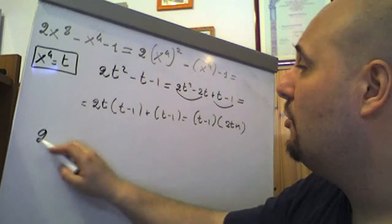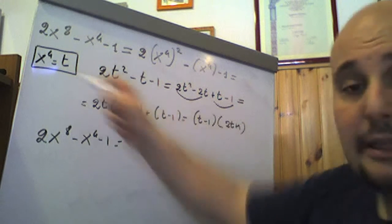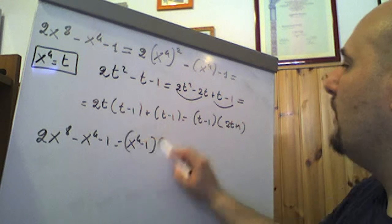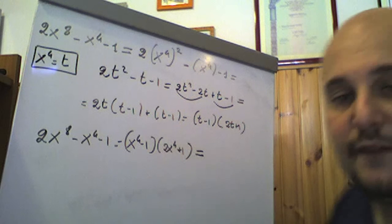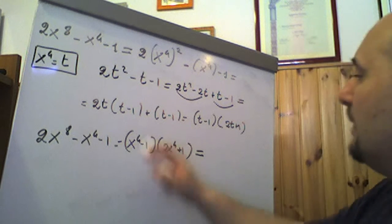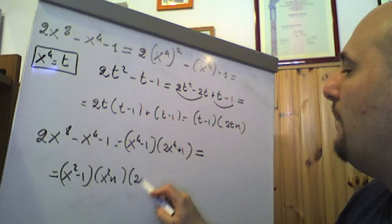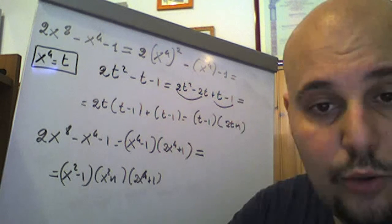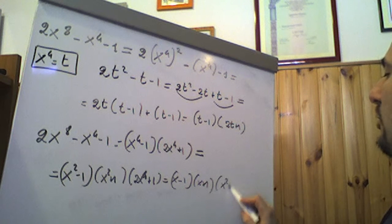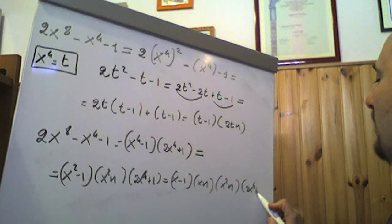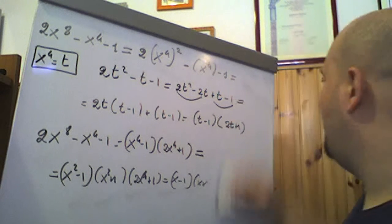Tornando alla variabile originale: 2x⁸ − x⁴ − 1 = (x⁴ − 1)(2x⁴ + 1). Ora x⁴ − 1 è una differenza di quadrati: (x² − 1)(x² + 1). A sua volta x² − 1 è un'altra differenza di quadrati: (x − 1)(x + 1). La scomposizione completa è quindi (x − 1)(x + 1)(x² + 1)(2x⁴ + 1).